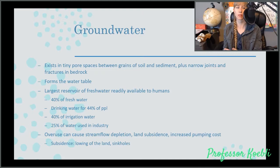The largest reservoir of fresh water readily available to humans is in the water table. It is groundwater. It makes up 40% of fresh water, 44% of people drink groundwater, and 40% of irrigation water is groundwater, as well as 25% of water used in industry. Overuse can cause a lot of problems, like streamflow depletion, land subsidence, which means your land actually sinks, increased pumping costs, and things like sinkholes.